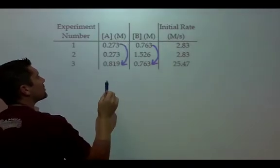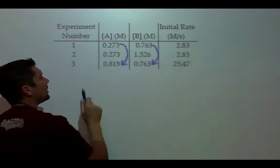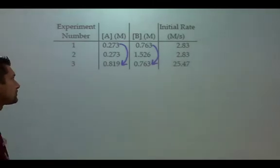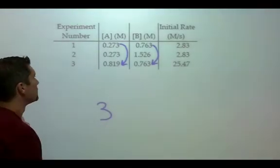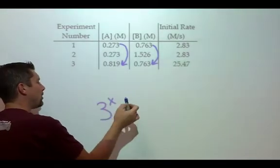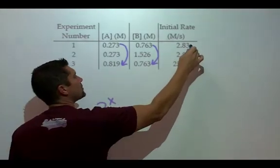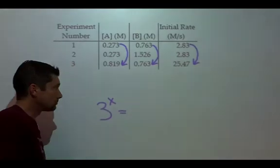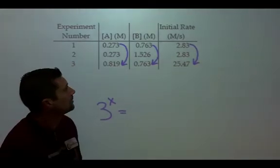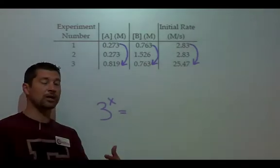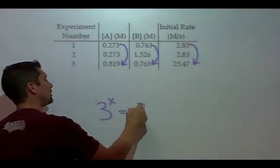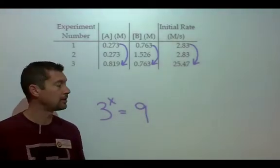Notice that B stays the same in experiments one and three. A does what? It goes from 0.273 all the way up to 0.819. So it triples. Use the calculator if you don't trust me. Three to some power equals what happens over here? It goes from 2.83 to 25.27. It's multiplied by a factor of 9.